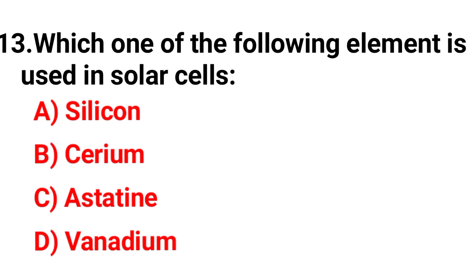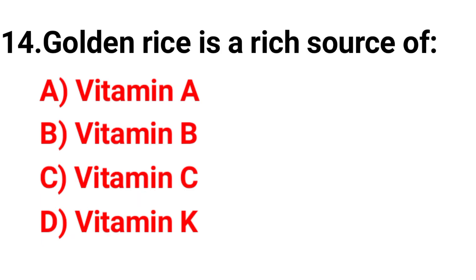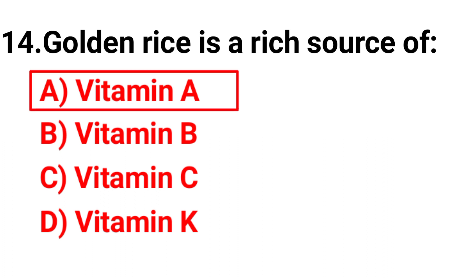Question thirteen: Which one of the following elements is used in solar cells? The right option is option A, silicon. Question fourteen: Golden rice is a rich source of — the correct answer is option A, vitamin A.